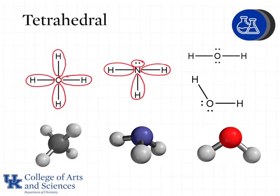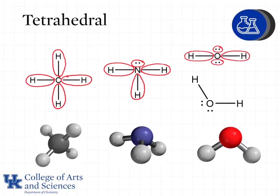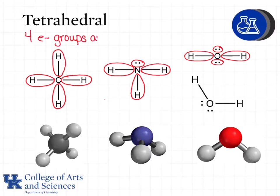Next we'll look at water, which can be drawn in a couple of different ways in its Lewis structure. Either way, we see that we have four groups around the central atom. We count the lone pairs on oxygen in water because oxygen is the central atom. So we have four groups around the central atom, which tells us that water has tetrahedral geometry.